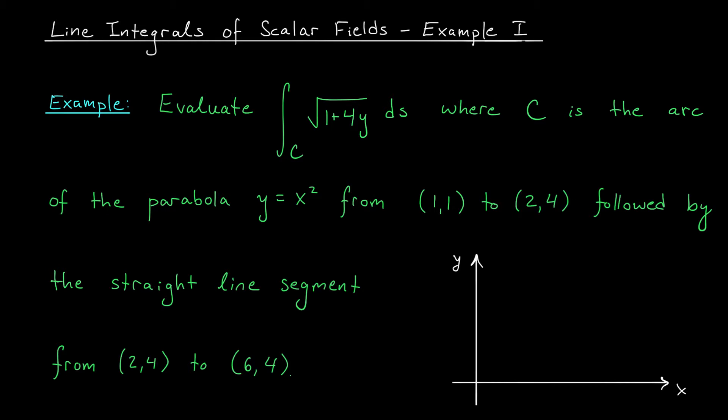I have a couple more for you today. So let's begin by finding this line integral, the integral of root 1 plus 4y ds along the curve C. Now C here is the arc of the parabola y equals x squared from the point (1,1) to (2,4), followed by the straight line segment from (2,4) to (6,4).